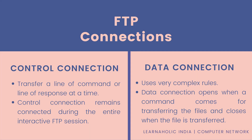There are two types of connections in FTP. The first is the control connection, which uses very simple rules for communication. Through the control connection, we can transfer a line of command or line of response at a time. The control connection is made between the control processes and remains connected during the entire interactive FTP session. The second is the data connection, which uses more complex rules as data types may vary. The data connection is made between data transfer processes, opens when a command comes for transferring files, and closes when the file transfer is complete.